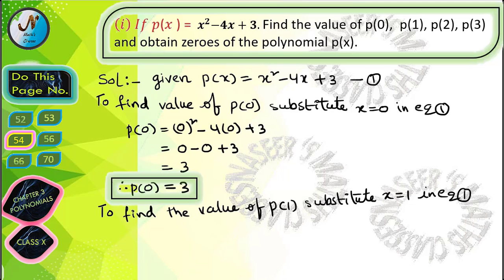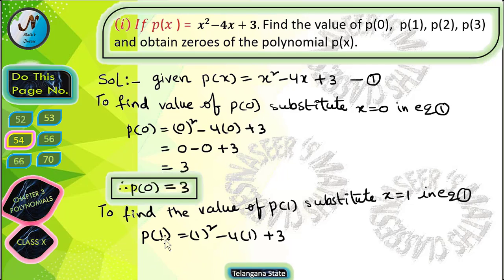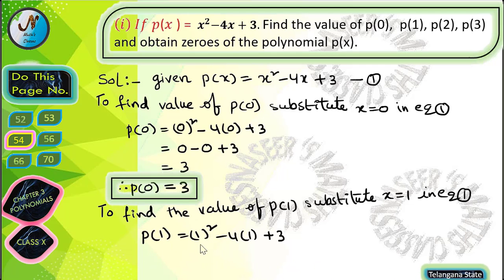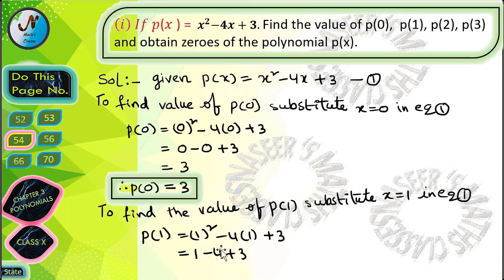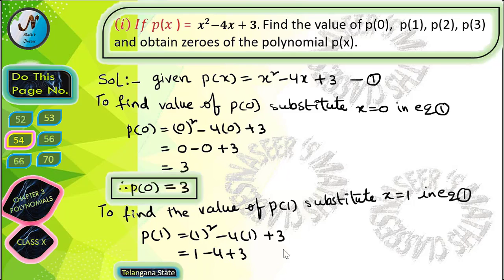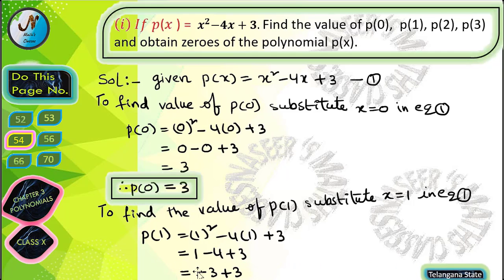To find the value of p(1), substitute x = 1 in equation 1. After substitution we get p(1) = 1² - 4(1) + 3. Now 1² = 1 and 4 × 1 = 4, so we get 1 - 4 + 3.